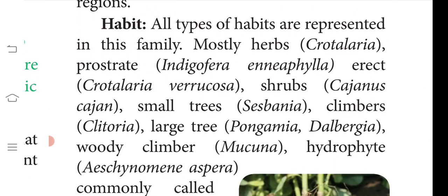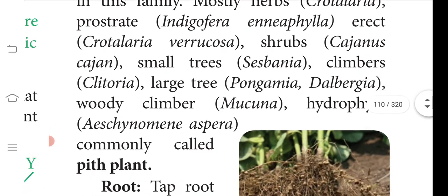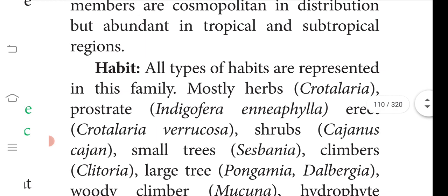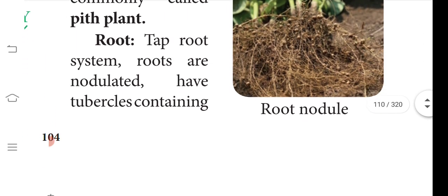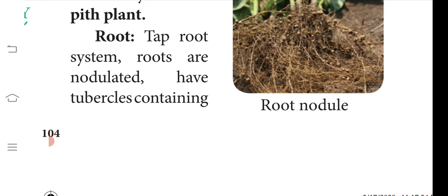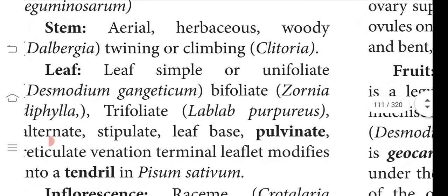We will learn about Clitoria ternatea, which belongs to family Fabaceae — the family that looks like a butterfly due to its corolla arrangement. The habit can be herbs, shrubs, or twiners. Clitoria ternatea has leaf modifications and also a tender stem to climb, making it a climber. A taproot system is seen and root nodules are present for nitrogen fixation.